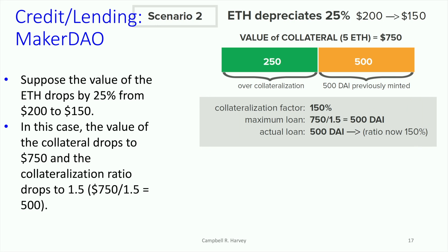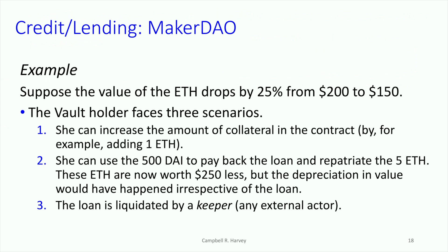This is a scenario where some action needs to be taken. Assuming ETH drops 25% from $200 to $150, the vault holder has a number of possible options. The first option, which is analogous to a margin call, is to add more collateral — for example, 1 ETH to the vault — which would put you above the 1.5 ratio.